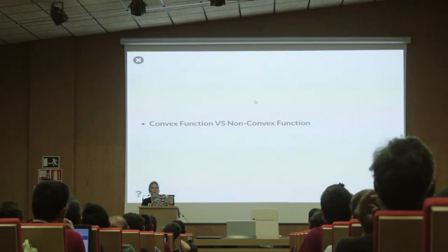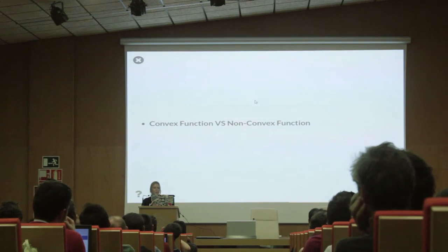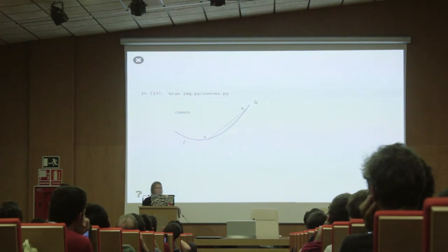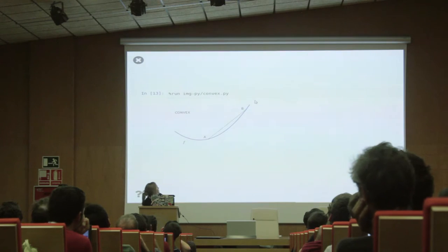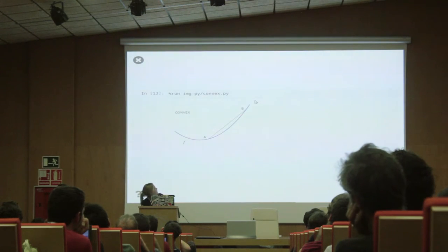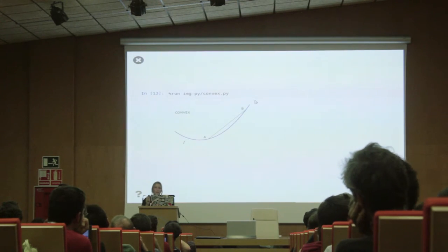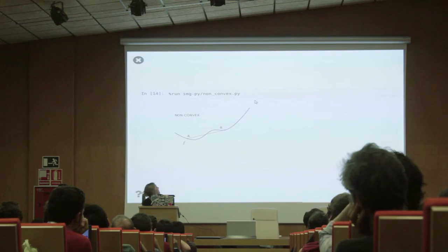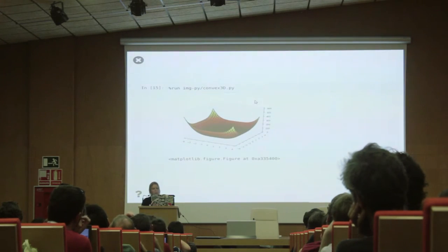Then we have convex function and non-convex function. This is the most important fact about simulation. The easiest to explain it: we draw point A and point B and draw a line. If we are in a function, it will be convex. But we cut the line here, so that means it's not a convex function. In 3D you can see it.